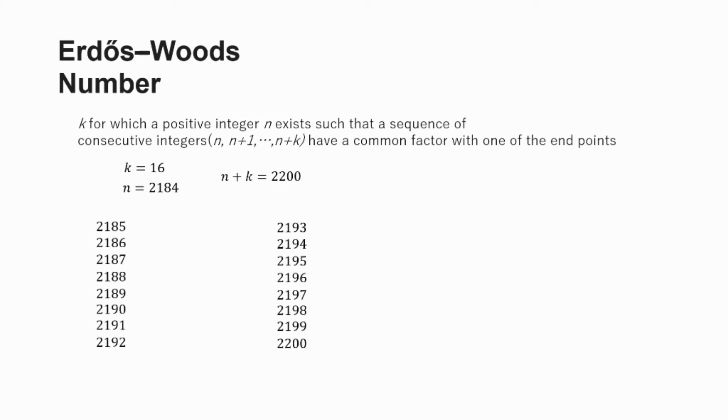That gives us all of these numbers, every number between 2,184 and 2,200, 16 total numbers. And what we're trying to check here is that these numbers have a common factor with either the end point, 2,200, or the beginning point, 2,184. Now let's look at what those common factors would be. The factors of the end points: for 2,184, the factors are 2, 3, 7, and 13. The factors of 2,200 are 2, 5, and 11. So that means every number in this series has to be divisible by either 2, 3, 5, 7, 11, or 13. So let's check and see if they do.